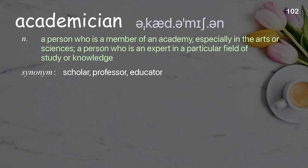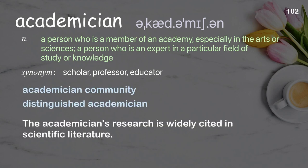Academician: a person who is a member of an academy, especially in the arts or sciences; a person who is an expert in a particular field of study or knowledge. Examples: academician community; distinguished academician. The academician's research is widely cited in scientific literature.